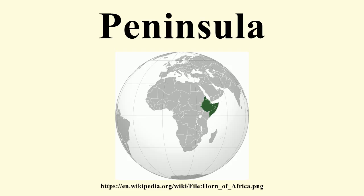Scotland: Black Isle (Ross and Cromarty), Cowal (Argyle and Bute), Dunnet Head (Caithness), Fife, Kintyre (Argyle and Bute), the Machars (Dumfries and Galloway), Rhinns of Galloway (Dumfries and Galloway), Strathy Point (Sutherland), Point of Helier (Orkney), and the Eye Peninsula (Western Isles).